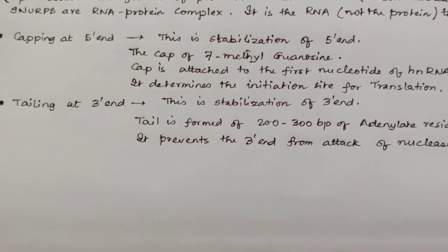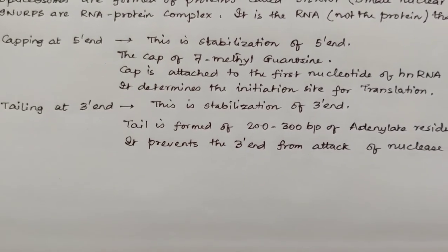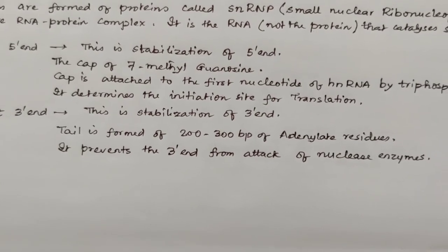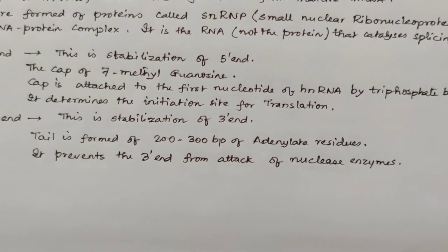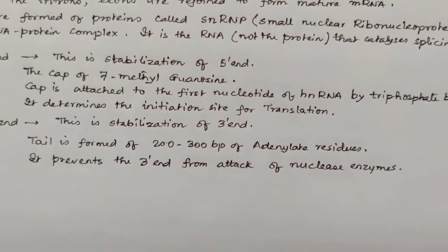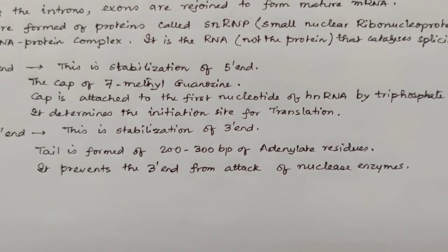And the third process is tailing, which is done at the 3' end. This is the stabilization of the 3' end. The tail is formed of about 200 to 300 base pairs of adenylate residues. The purpose is it prevents the 3' end from attack of nuclease enzymes.